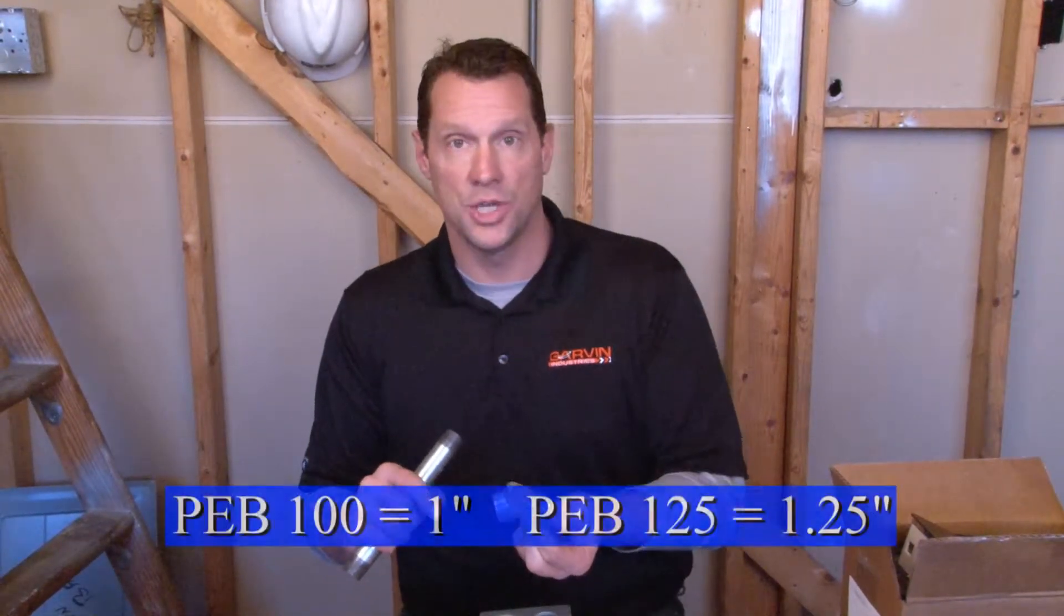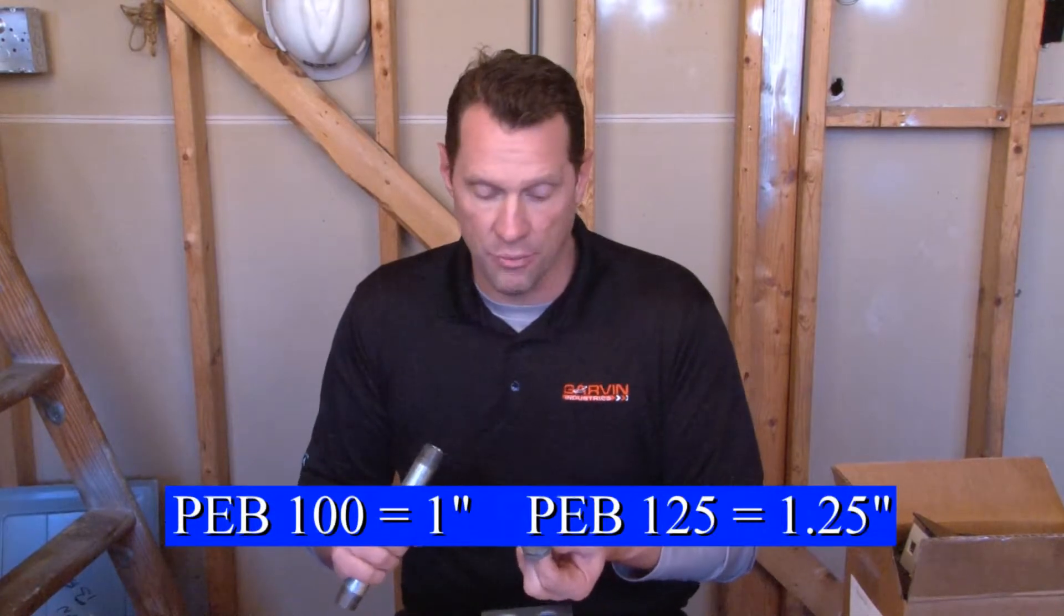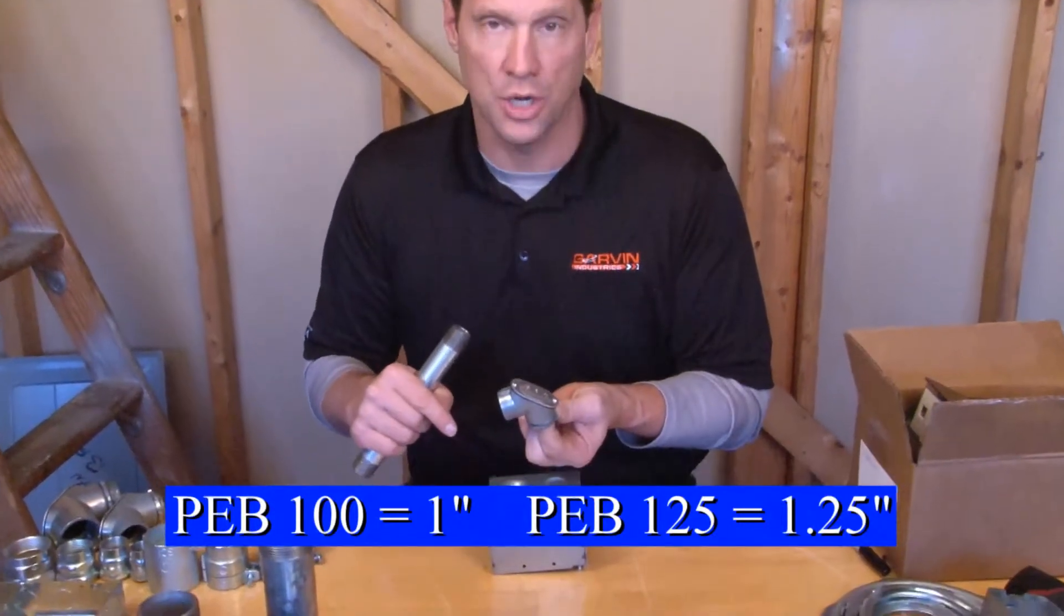Part number PEB100 is a 1 inch, 90 degree fitting for threaded rigid conduit that's attaching to an electrical junction box.